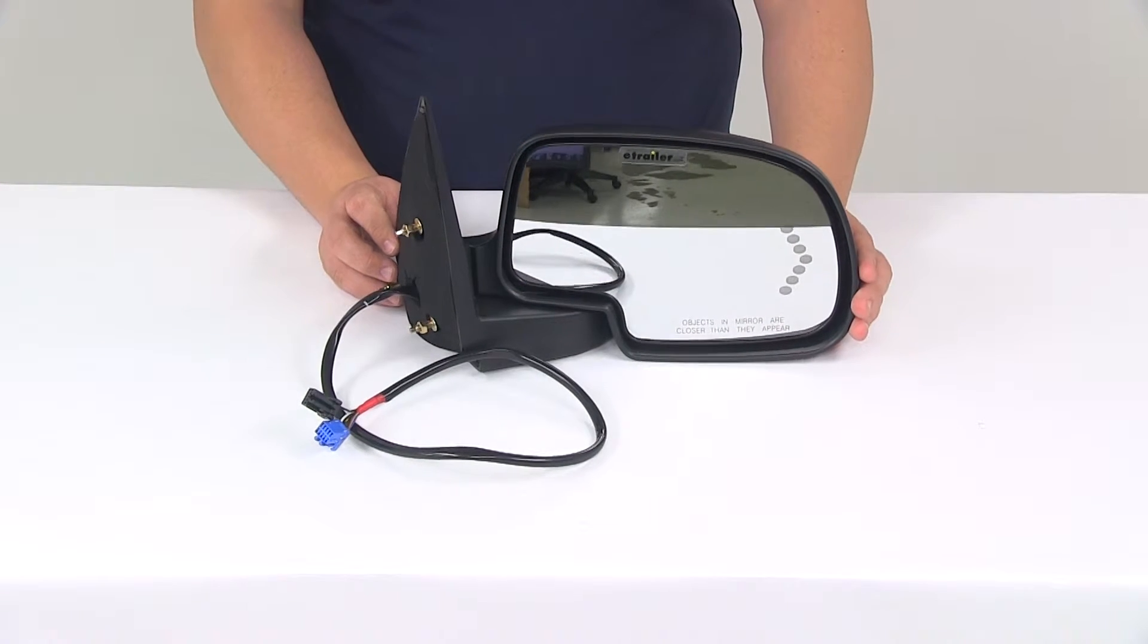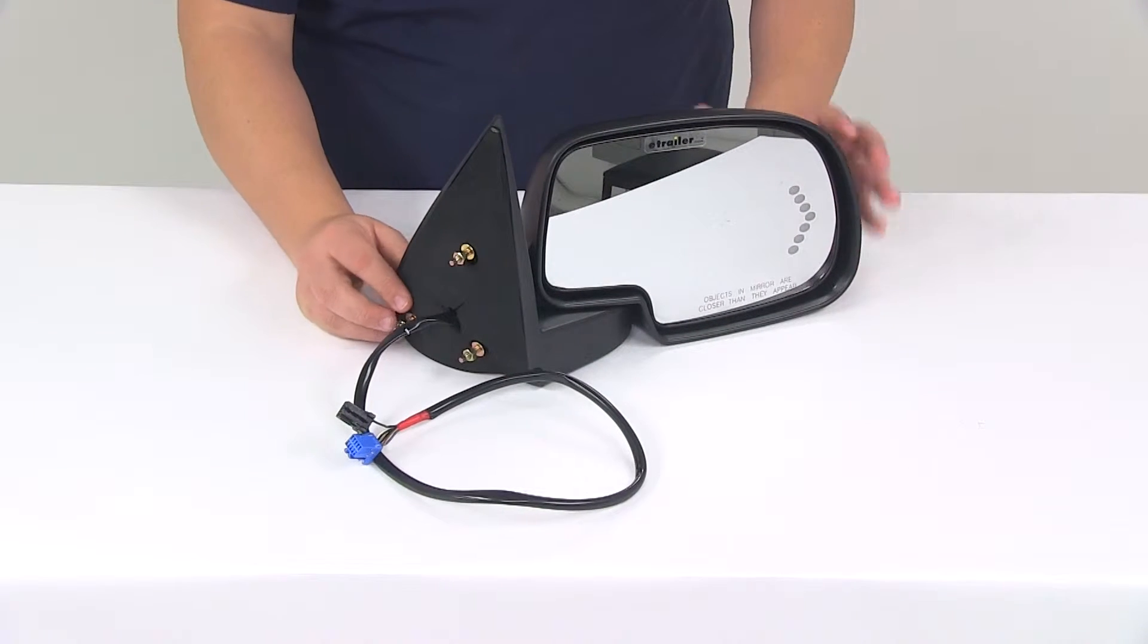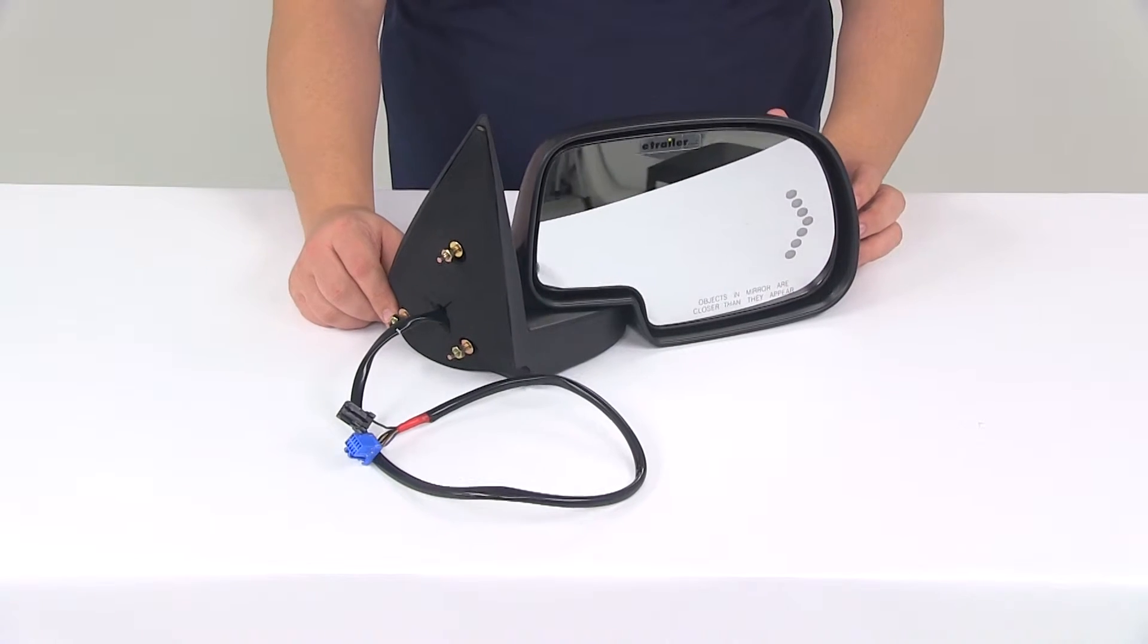The side view mirror is a direct replacement for the passenger side factory mirror on your vehicle. This is modeled after the manufacturer's original look and fit. It does feature power remote capability so you can adjust the mirror face position using the factory power controls from inside the vehicle.